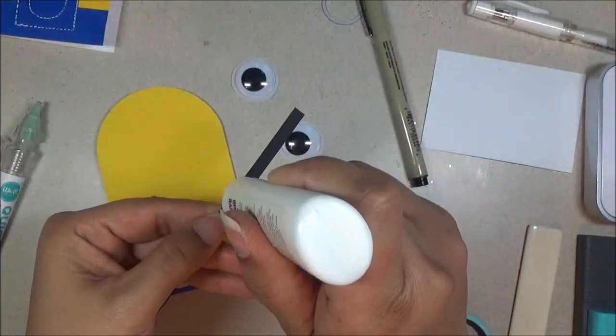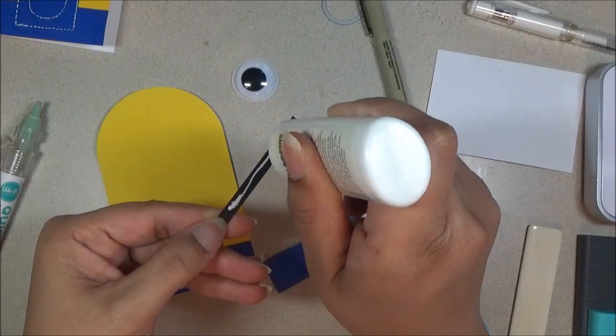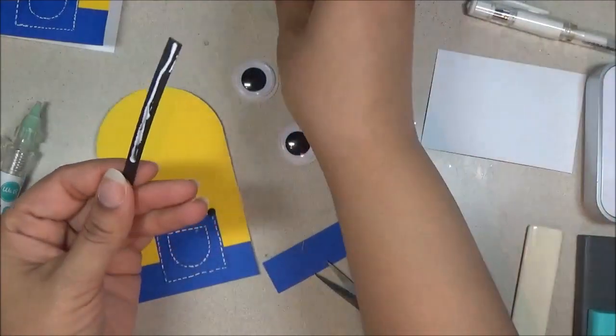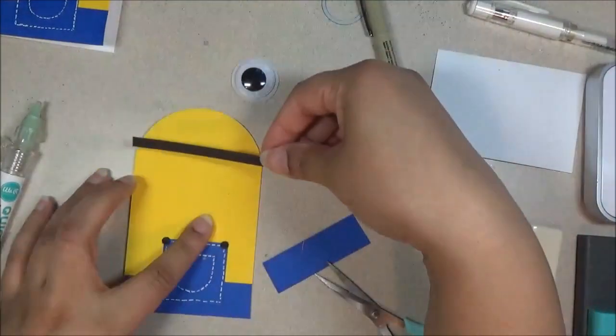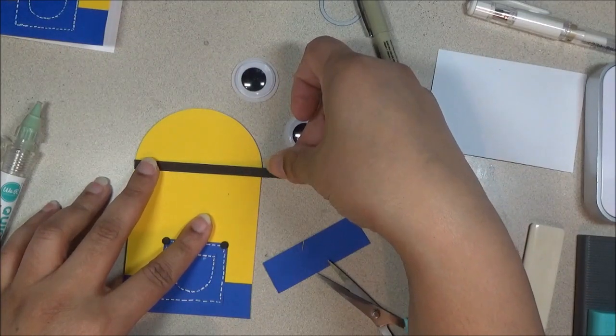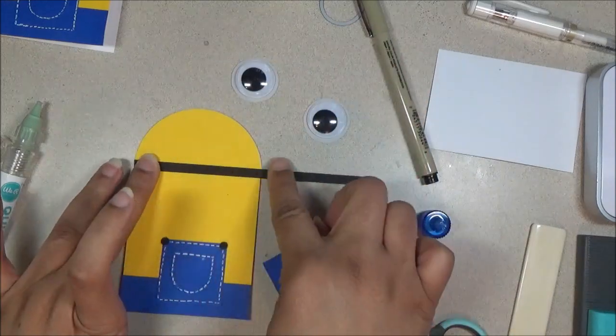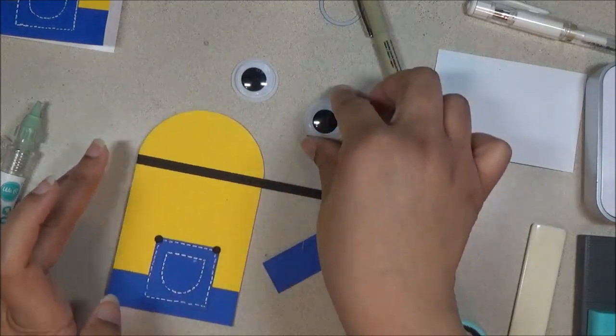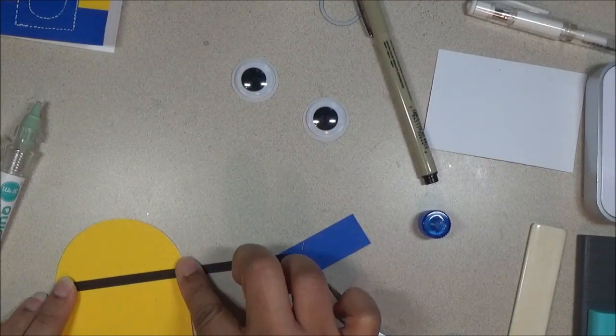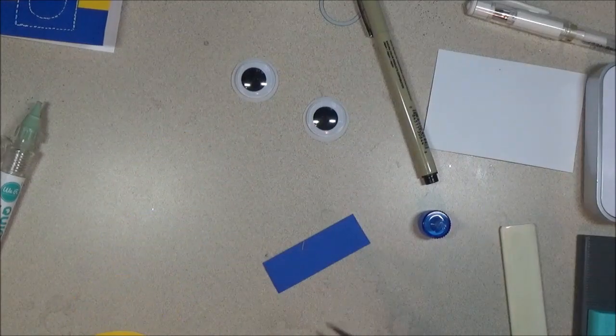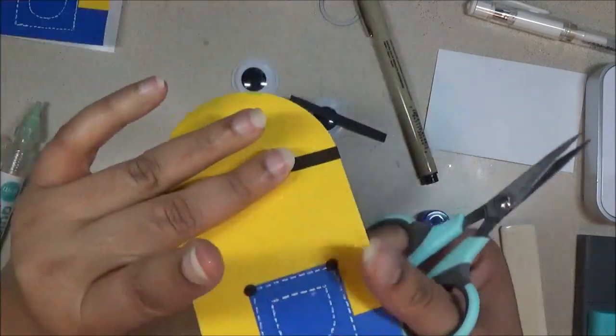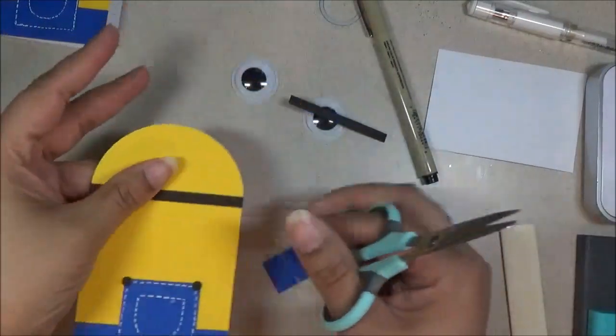Then we'll do the little strip for the goggles, the little band. That will trim off the extra. Okay, this is what we have so far.